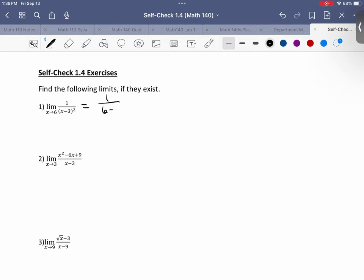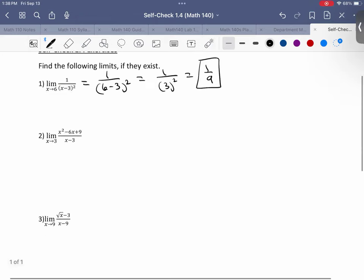So let me go ahead and plug this thing in. So 1 over 6 minus 3 squared, and that's just 1 over 3 squared, and that's just 1 ninth. And that's it. That's the answer.